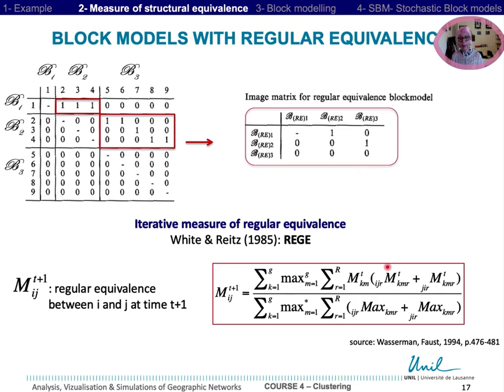The numerator corresponds to how i's ties to and from k actors can match with j's ties to and from m actors.